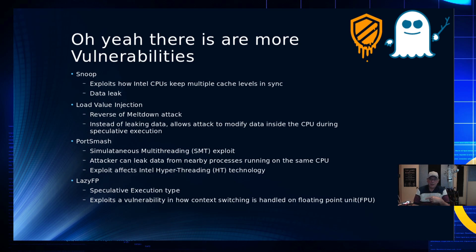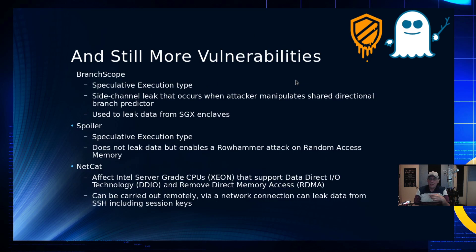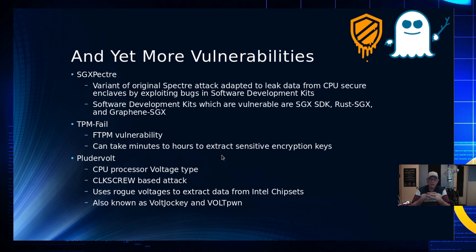Also LazyFP, another speculative execution vulnerability. There's BranchScope, which was a side-channel attack. Spoiler, another speculative execution vulnerability. Netcat allowed data to be extracted remotely over a network, and it affected just the server-grade Xeon processors, and also RDMA — remote direct access memory. There's also SGX Spectra, which was an adapted attack to extract data from the secure areas of the SGX. This exploited bugs in the software development kits — the SGX SDK, Rust SGX SDK, and Graphene SGX SDK.